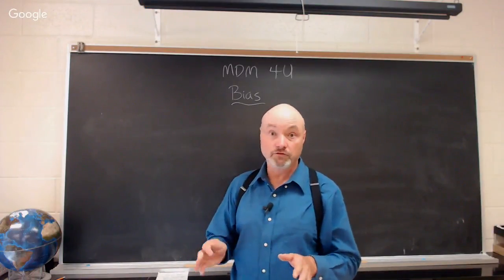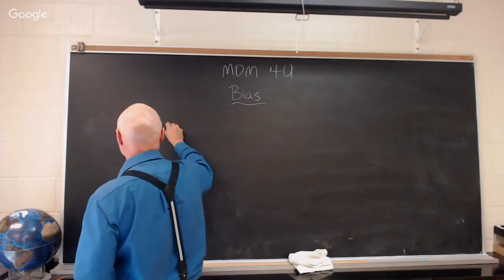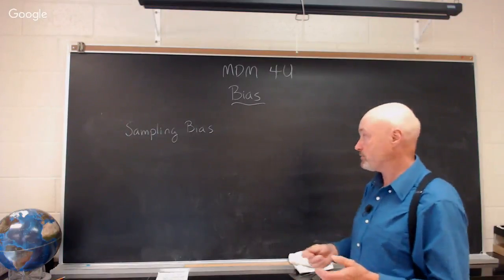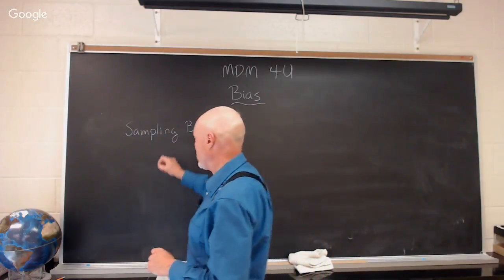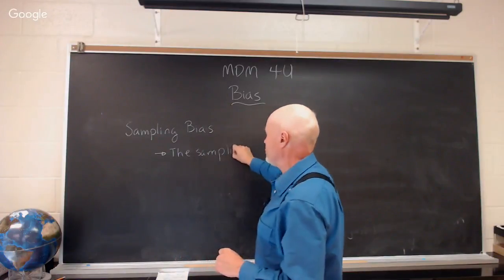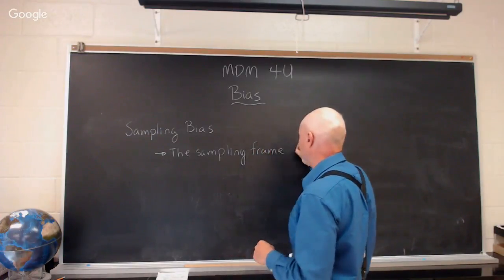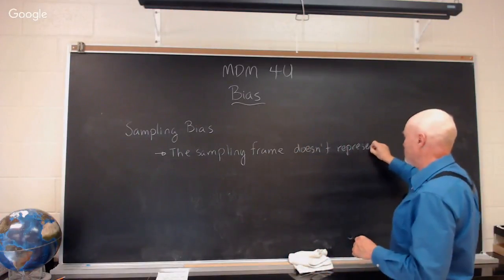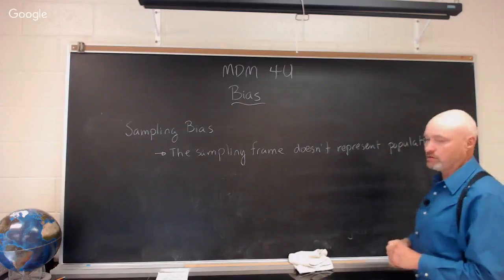It can enter at a few places. The first problem you can run into is sampling bias. When you're making your sample, you can choose your sample and inadvertently get the wrong results. One of those is having the sampling frame not represent the population you're interested in knowing about. That sounds hard when you say it like that.